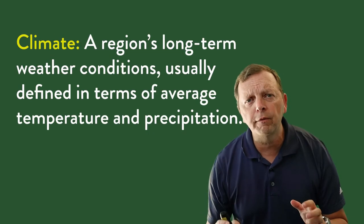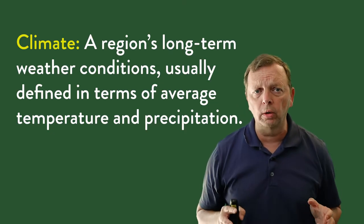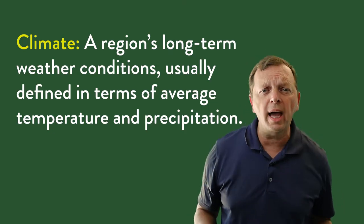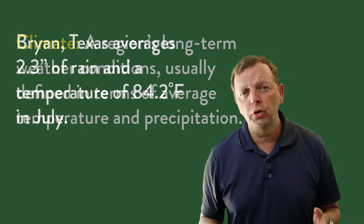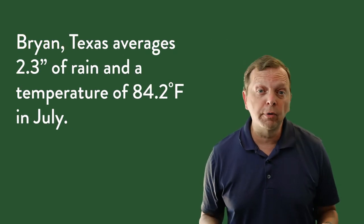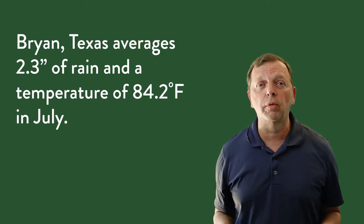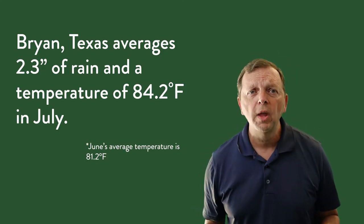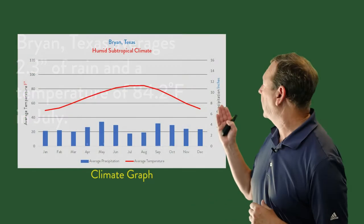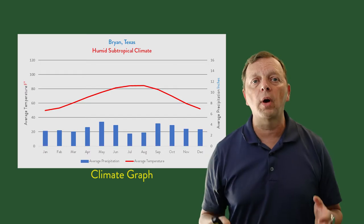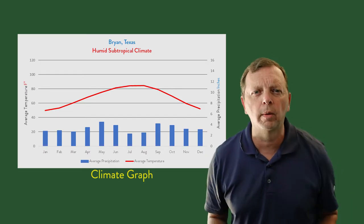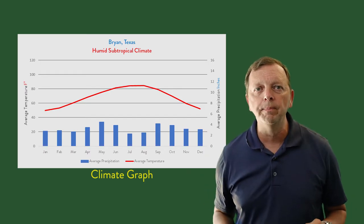Climate, however, is the average weather conditions for a particular location over a period of time, usually over years. An example of climate would be if I told you that Bryan, Texas on average receives just over two inches of rain and has an average temperature of just about 81 degrees. We often use something called a climate graph like this one to show these averages and to describe a climate of a region. We'll talk more about that in our next lesson. But right now, we know the difference between climate and weather.